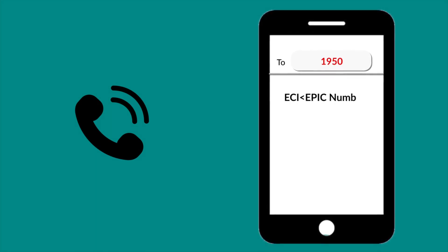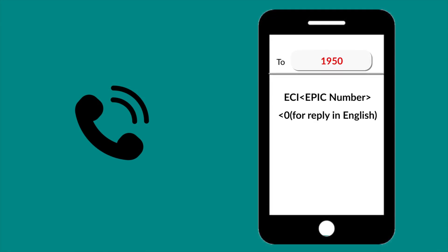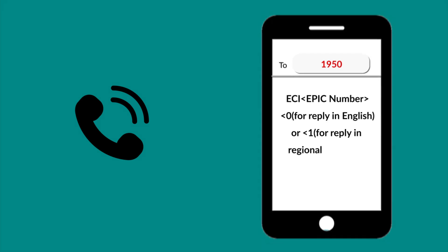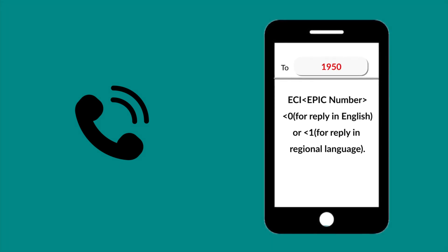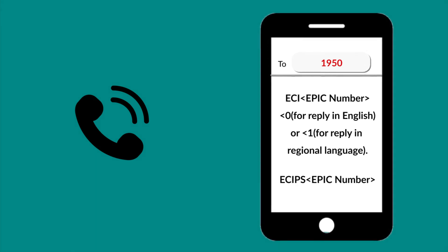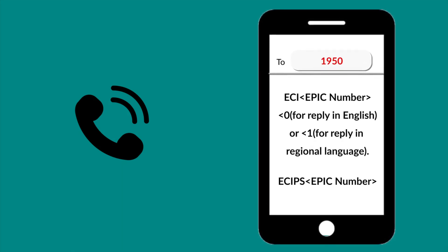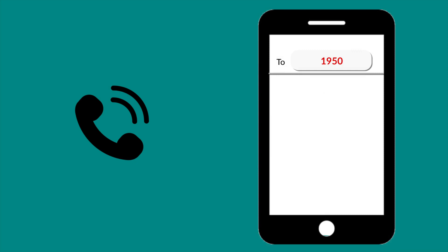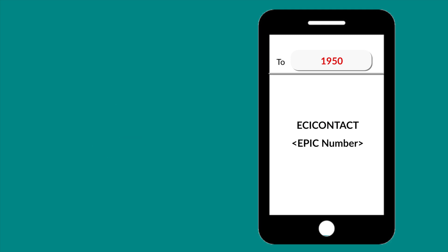The SMS formats are: 'ECI space EPIC number space 0' for a reply in English, or '1' for a reply in the regional language. 'ECI PS space EPIC number' will give you the address of the polling station where the voter needs to cast their vote. 'ECI CONTACT space EPIC number' will provide the contact details of booth level officers, electoral registration officers, and district election officers.